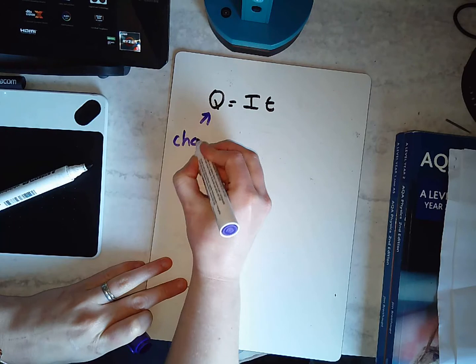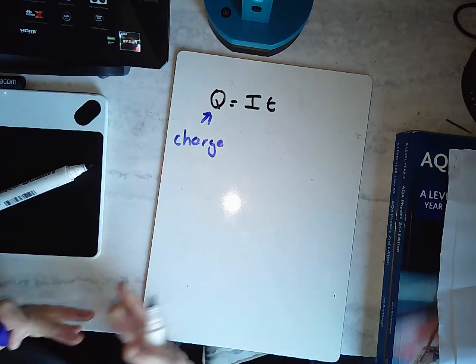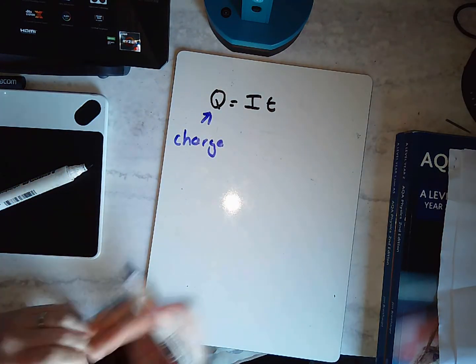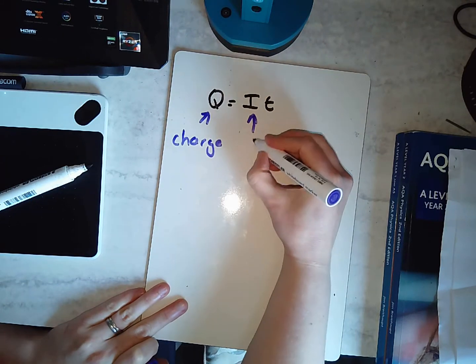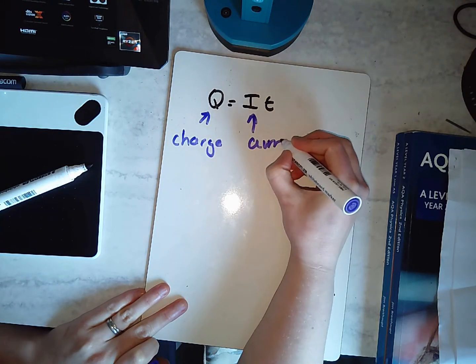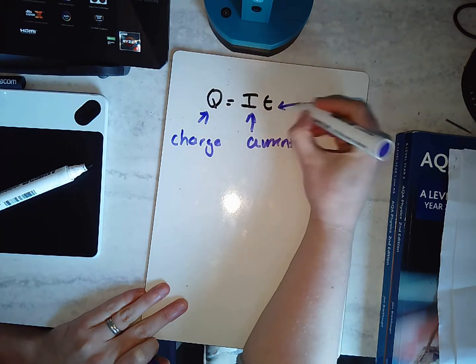Charge is all to do with electrostatics, electric fields. This is the current in a circuit. And this is the time.